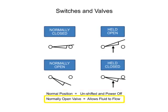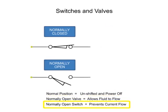While a normally open valve allows fluid to flow, a normally open switch prevents current from flowing. Electrical current can flow across the switch as long as both sides are touching contactors.